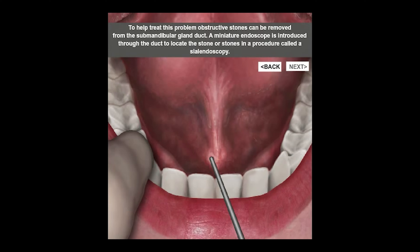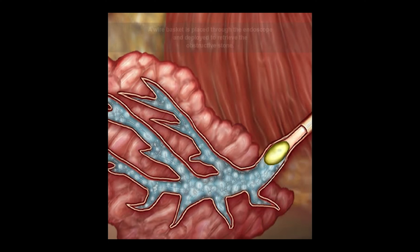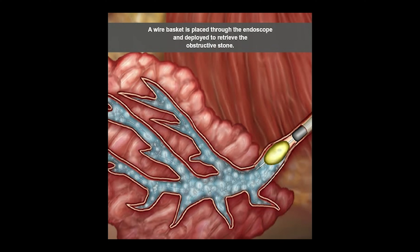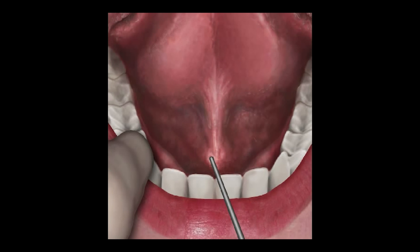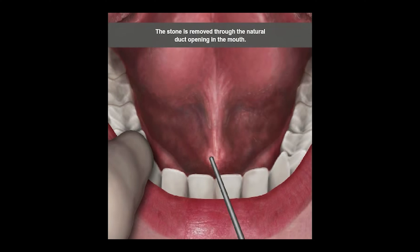Here we see the stone that's blocking the saliva. We open and deploy a basket, grab the stone, and pull it backwards out of the duct and through the natural opening. This requires no incisions — it's a very natural process and the saliva is able to discharge through the normal opening under the tongue.